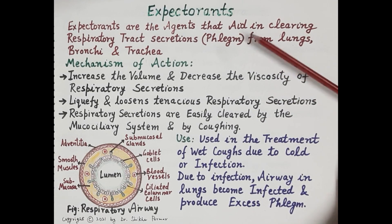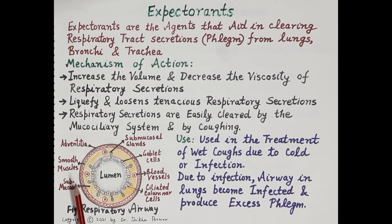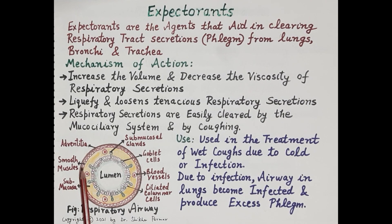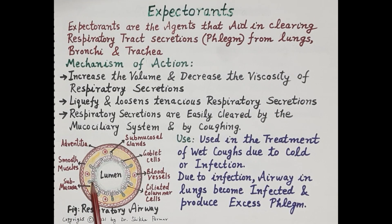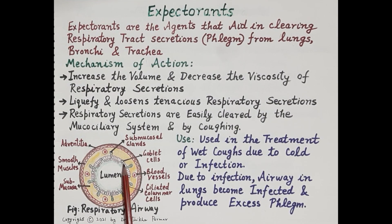This diagram shows a transverse section of a respiratory tube, depicting the structure of its wall. The outermost layer is termed adventitia, below which is a layer of smooth muscle cells, then the submucosa. The innermost lining, the mucosa, is made up of ciliated columnar epithelial cells, and in between these cells are present goblet cells, shown here in green.